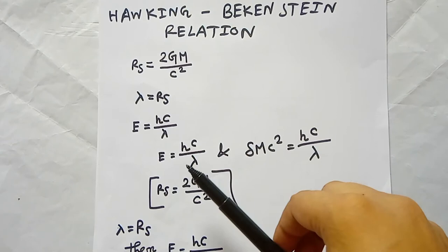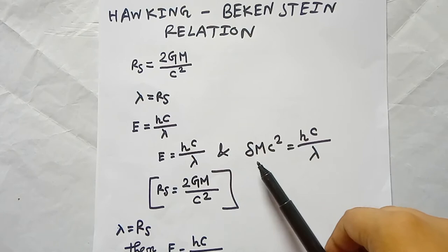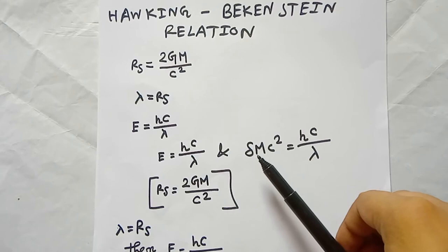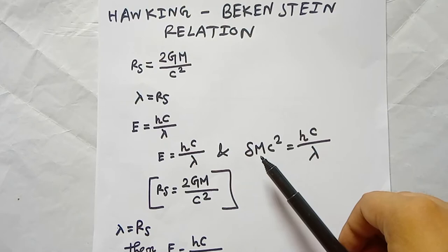So E equals hc divided by lambda. Now delta E equals hc divided by lambda, and we know that delta E equals delta m times c squared — a small change in mass gives delta mc squared. This comes from the special theory of relativity: E equals mc squared.